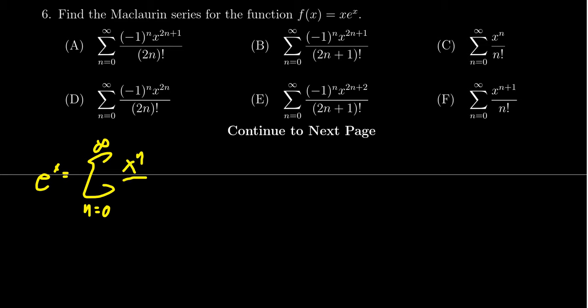We get x^n over n factorial. To get the Maclaurin series for the function we want, we're going to multiply everything by x. As this is a sum, we can distribute the x through.